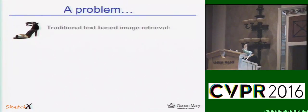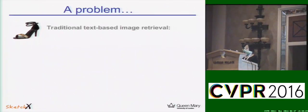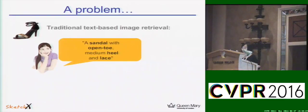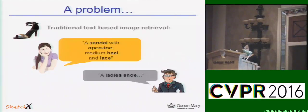Here is the shoe which I wanted to search. As we all know, the traditional and most widely used image retrieval method is based on text, which requires users to describe the image they want to search. So here's my description: a sandal with open toe, medium heel, and lace. I also asked Bob to describe that shoe. His description was simply: the latest shoe.